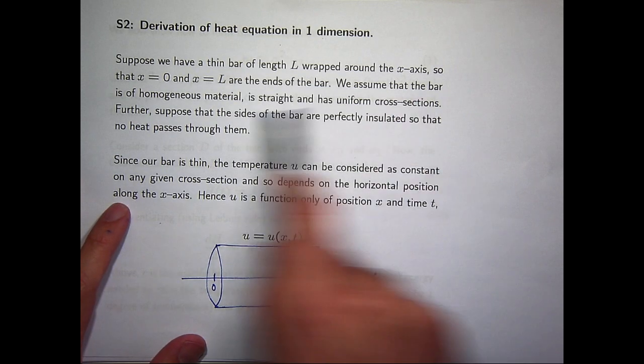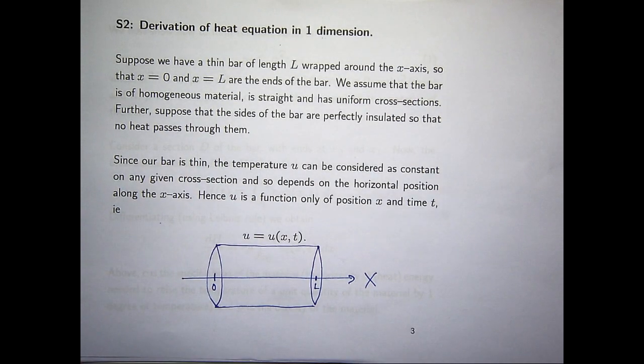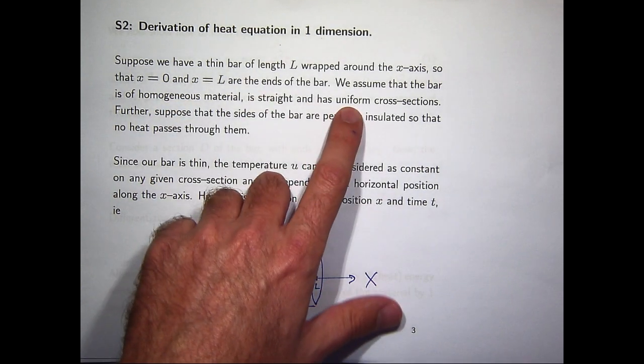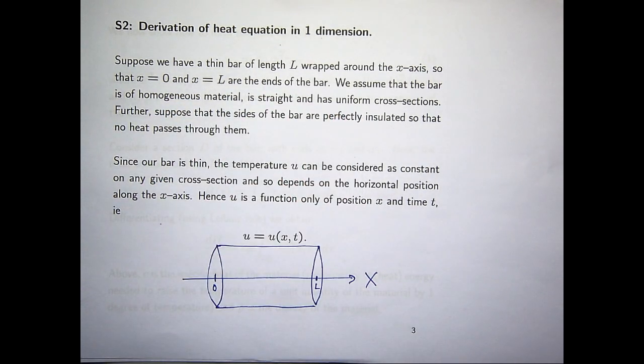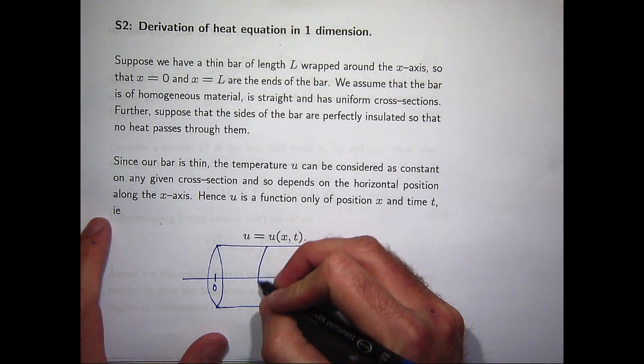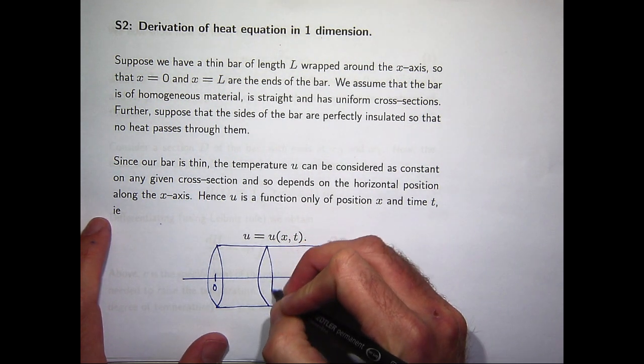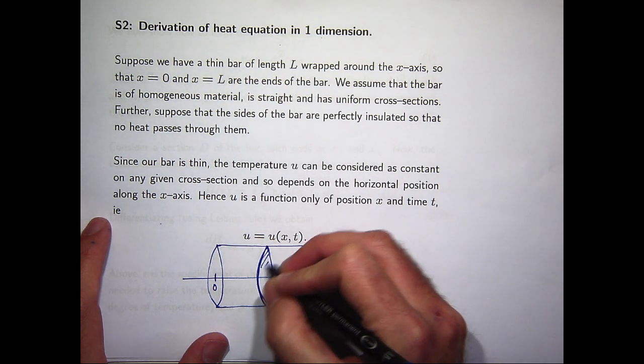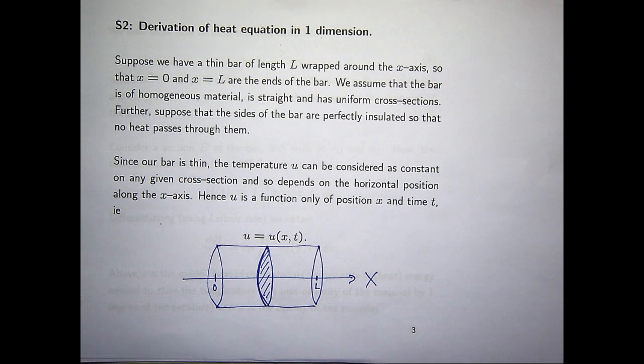Let's assume that the bar or the rod under consideration is made of homogeneous material, is straight, and has uniform cross-sections. By uniform cross-sections, I mean you can see in this picture, if I slice the bar sort of perpendicular to the x-axis, I'll always get discs or circles.